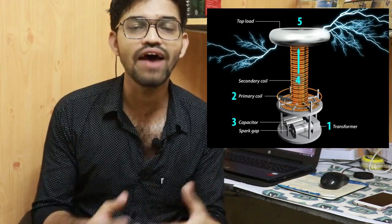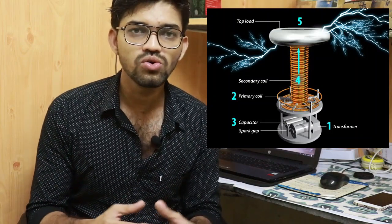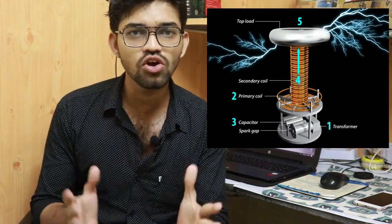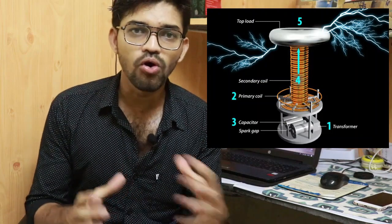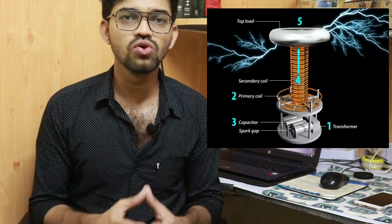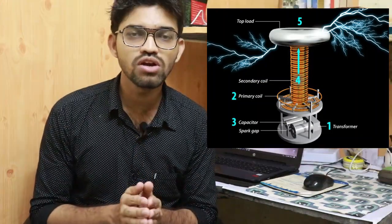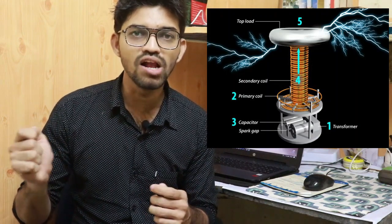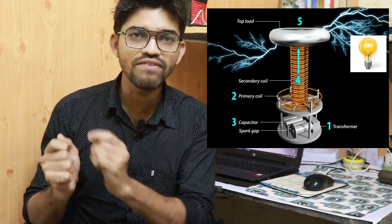This is the overall working of the Tesla coil in a two-coil configuration. The Tesla coil can also be built in a one-coil configuration, but the resulting output is greater in the two-coil configuration. When you bring a light bulb near the Tesla coil, the bulb actually glows without any physical connection — demonstrating wireless electricity transmission.